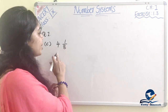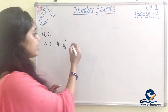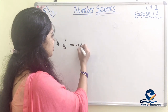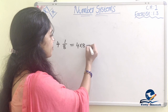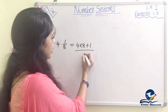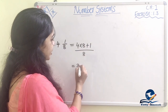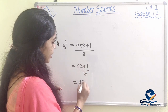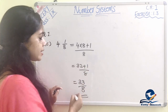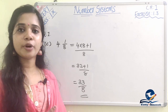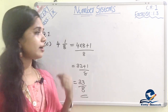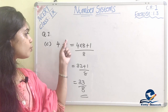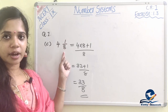Next: 4 and 1 by 8 is the question. For this mixed fraction, we do 4 into 8 plus 1, divided by 8. That is 32 plus 1 by 8, equal to 33 by 8. The mixed fraction converts to the improper fraction with the same denominator.